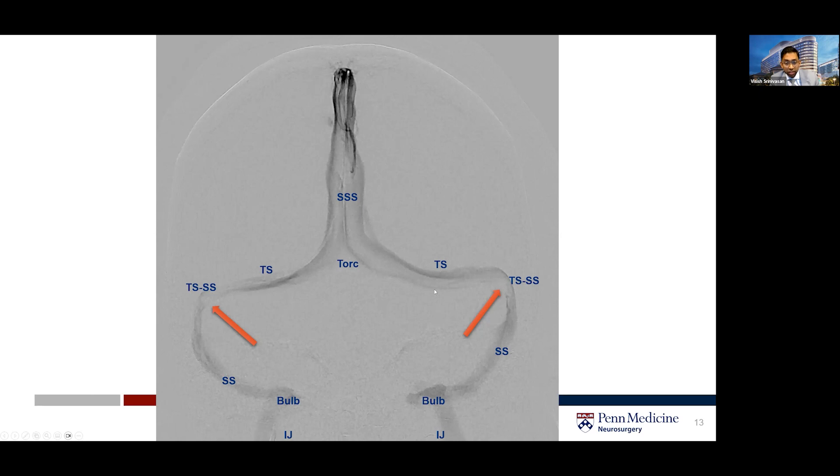During these studies for venous manometry, we're measuring pressures at all of these different locations to be able to detect with high sensitivity any potential site of a pressure gradient that would ideally correlate with angiographic stenosis.